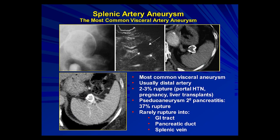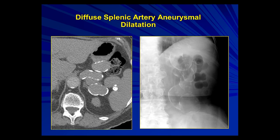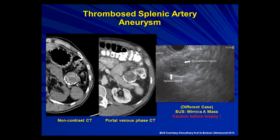Splenic artery aneurysm is the most common visceral aneurysm. They're usually distal near the splenic hilum. They are more likely to rupture in patients with portal hypertension, pregnancy, or liver transplants. If they are pseudoaneurysms secondary to pancreatitis, they have a very high incidence of rupture, sometimes into unusual locations. You can have aneurysmal dilatation of literally the entire length of the splenic artery. Sometimes they can thrombose — be careful not to biopsy a peripherally calcified presumptive tumor unless you're really sure it's not a thrombosed splenic artery aneurysm.